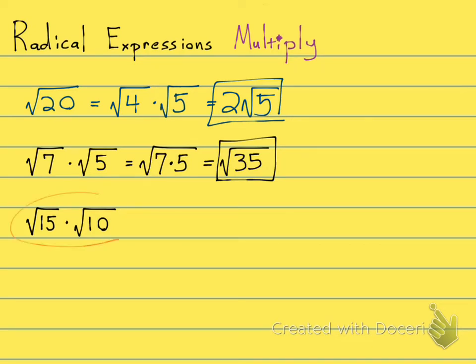The square root of 15 times the square root of 10. Now these are going to do something cool when we put them together. So first, let's write it all under one radical. The square root of 15 times 10. And now, I know that 15 times 10 is 150.